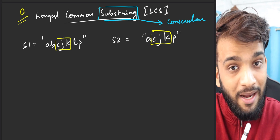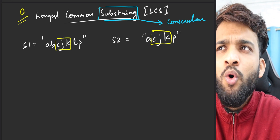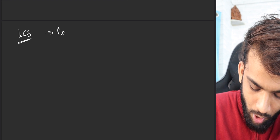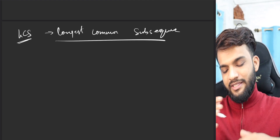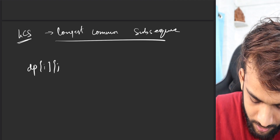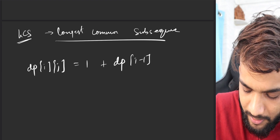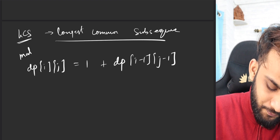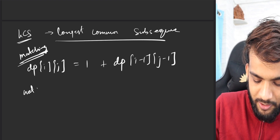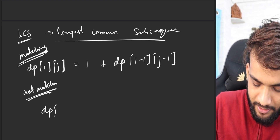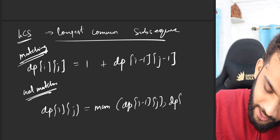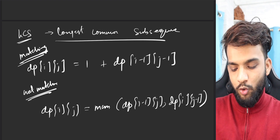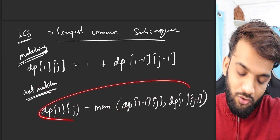Can you solve this using the previous LCS formula with certain modifications? Yes, but you have to modify it. In LCS, we wrote: dp[i][j] = 1 + dp[i-1][j-1] if they're matching, and if not matching: dp[i][j] = max(dp[i-1][j], dp[i][j-1]).